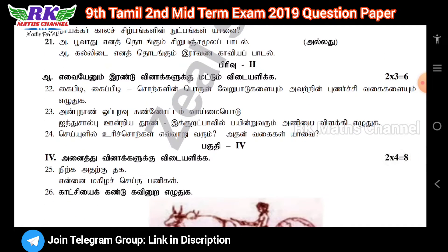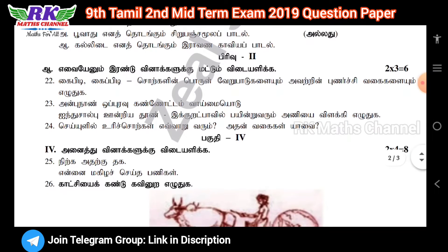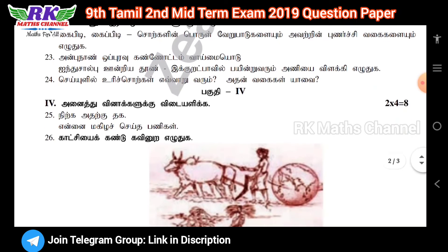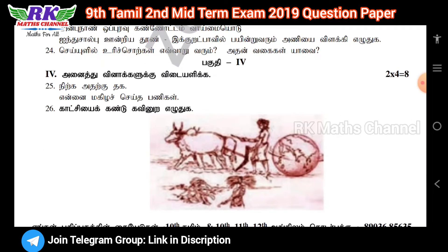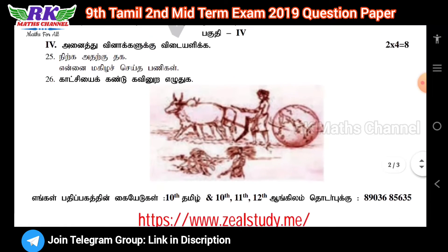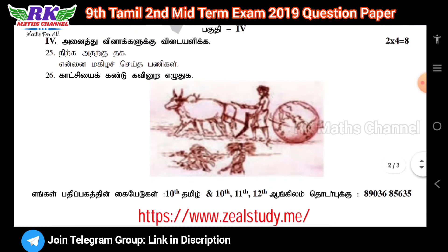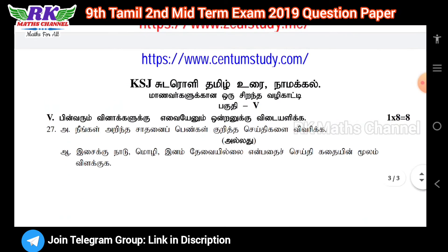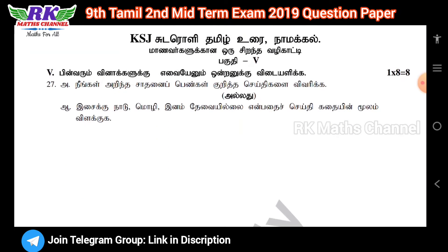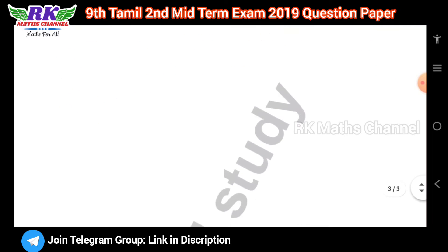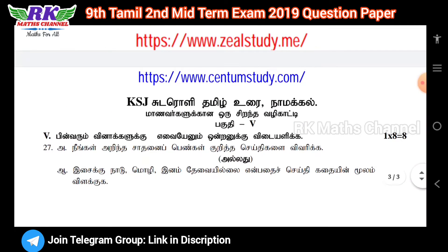Next, Part 3: three questions, two threes are six marks. Next, Part 4: picture-based questions — two fours are eight marks. Part 5, the last section: one eight-mark question, so one eight is eight marks.